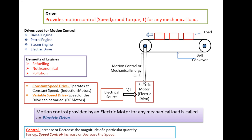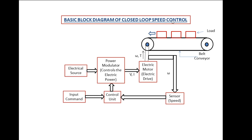For speed control, we need a closed-loop system. In the basic block diagram of a closed-loop speed control system, electrical input energy is given to a power modulator. The power modulator has two functions: first, it can change the nature of the electrical signal — from AC to DC or DC to AC as required. Second, it can control the electric power — increasing or decreasing the voltage or current as per the load requirement. The output of the power modulator is given to the electric motor, which converts electrical energy into mechanical energy in the form of speed and torque for the belt conveyor.